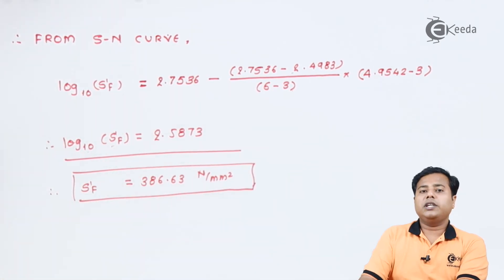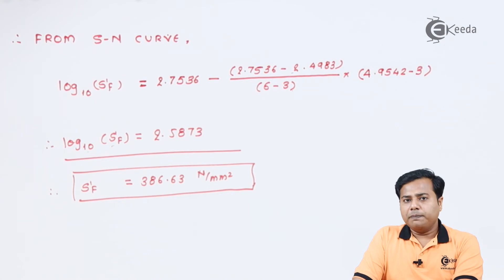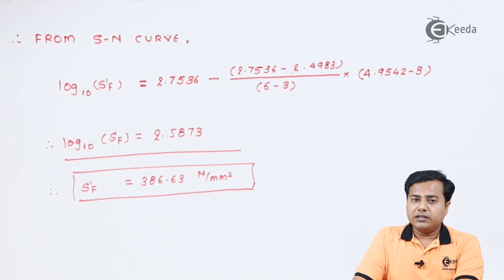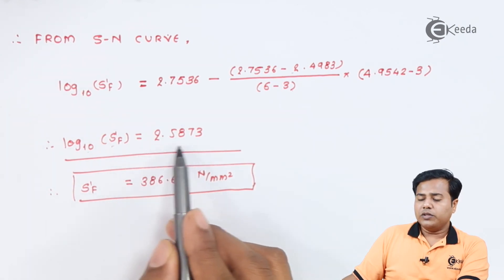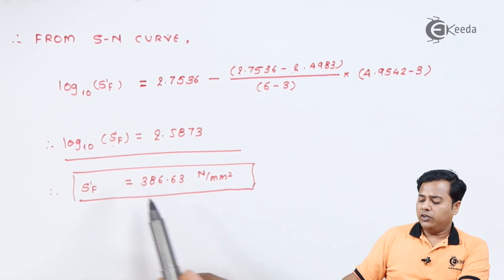So this is what the strength, or precisely the fatigue strength, which we are considering for this particular product after 90,000 cycles. So in this case, what we have done is at extreme points we have found out the logarithmic values, and we have plotted the S-N curve with the given representation. In the S-N curve, we came to know that the desired value lies between two extremities, so that we actually interpolated the expression.